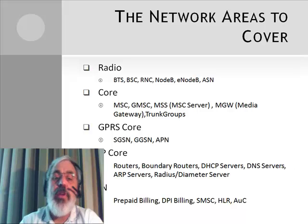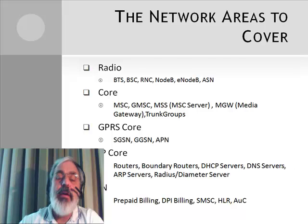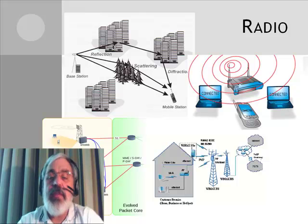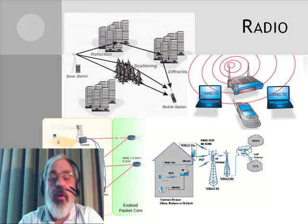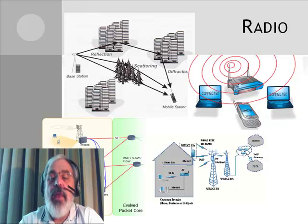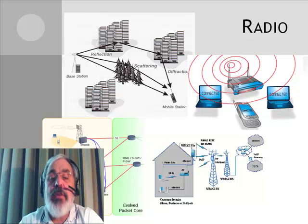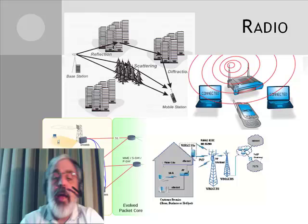The network areas you're going to cover are radio, core, GPRS core, IP, and IN. Radio is the way customers get into our network. It includes the BTS, the BSC, the WiMAX network — we call them the GRAN, the UTRAN, the EUTRAN, and the WiMAX radio configurations. If you don't have a good inventory of all those pieces and don't understand how they work, it's not going to be possible to troubleshoot when you have security, fraud, and leakage problems.